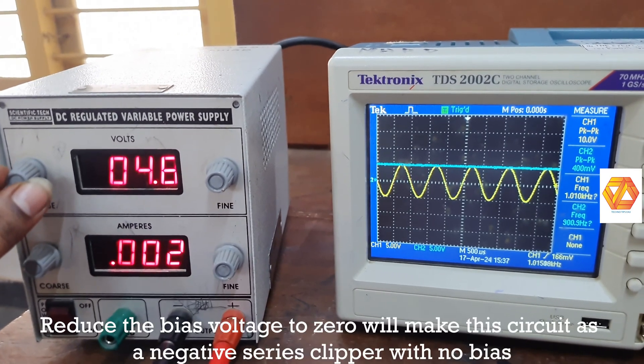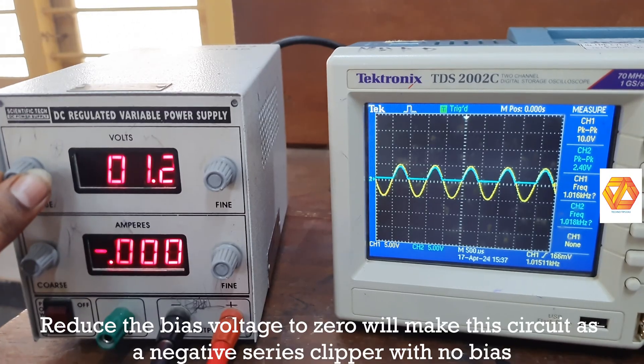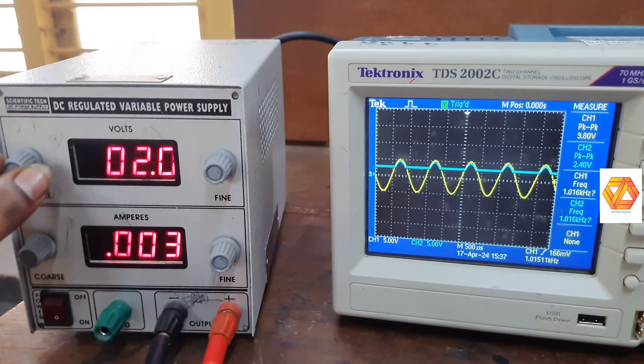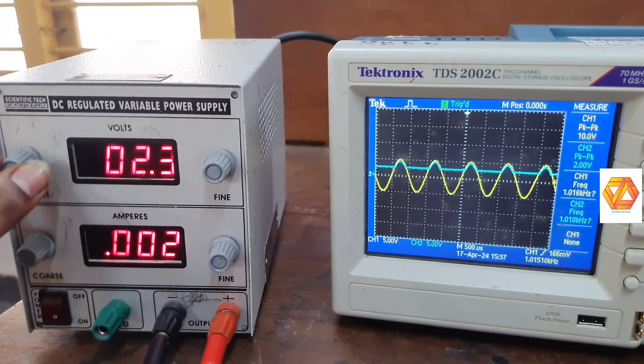So output will be 0.7 volt less than the input because 0.7 volt will drop across the diode. Diode's cut in voltage is 0.7. This is a silicon diode.